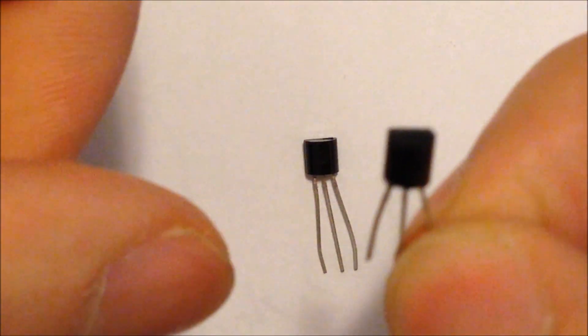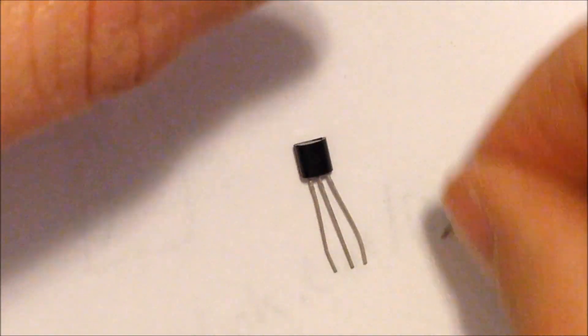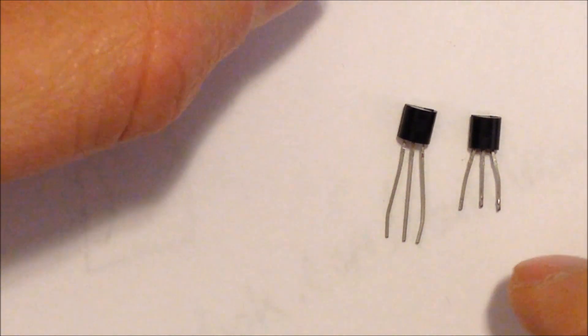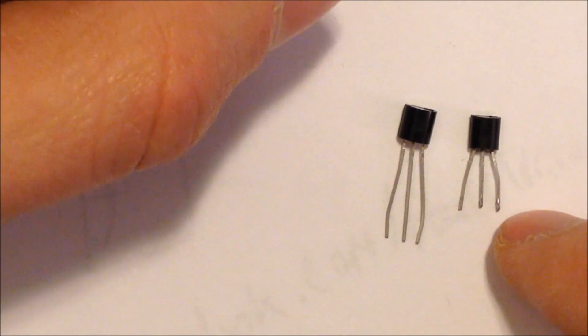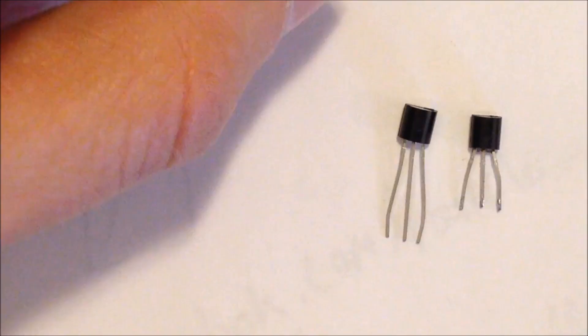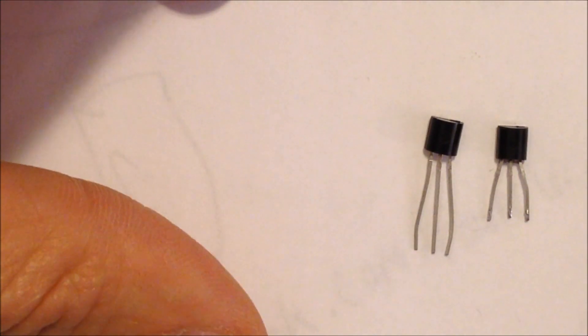They both have three legs, and one side has a flat side and the other side is rounded. But other than that, there's no way to really tell them apart. The leads are shorter on one only because I pulled this from a circuit I was using it previously for something. But other than that, if you take an NPN and a PNP, they're going to be exactly the same.